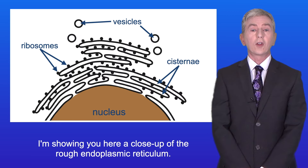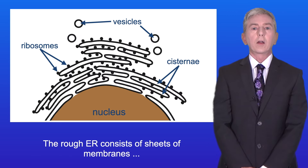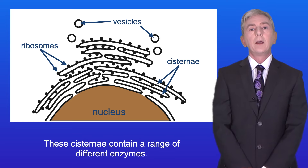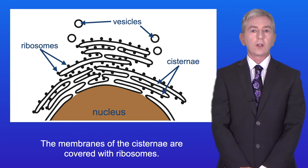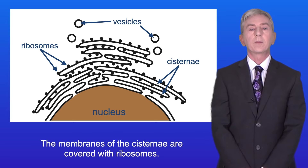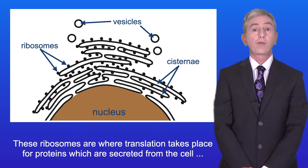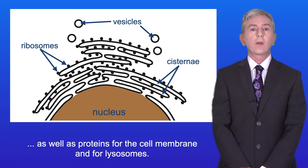Here is a close-up of the rough endoplasmic reticulum. The rough ER consists of sheets of membranes forming flattened sacs called cisternae, and these cisternae contain a range of different enzymes. The membranes of the cisternae are covered with ribosomes. These ribosomes are where translation takes place for proteins which are secreted from the cell, as well as proteins for the cell membrane and for lysosomes.